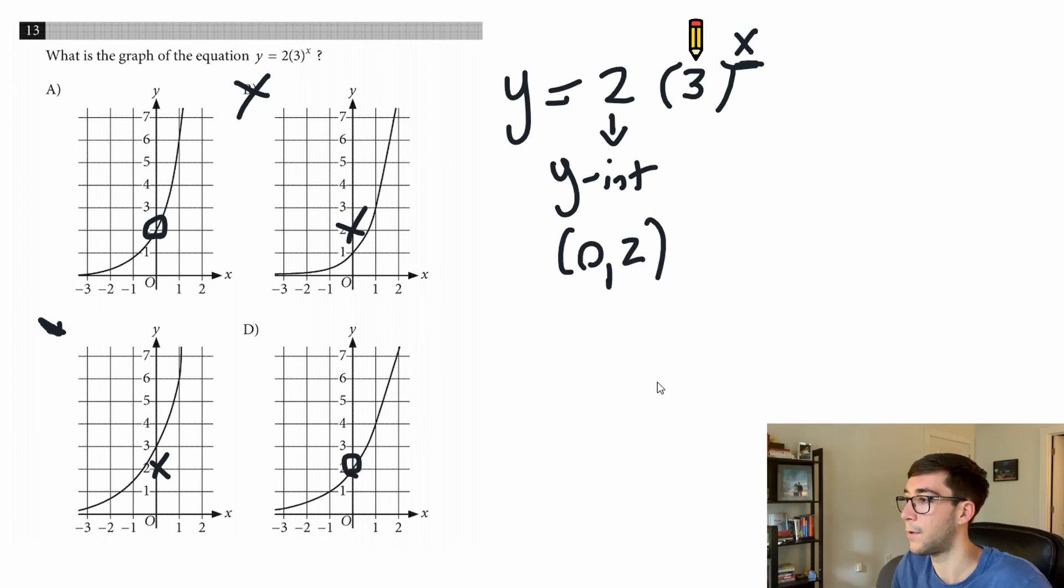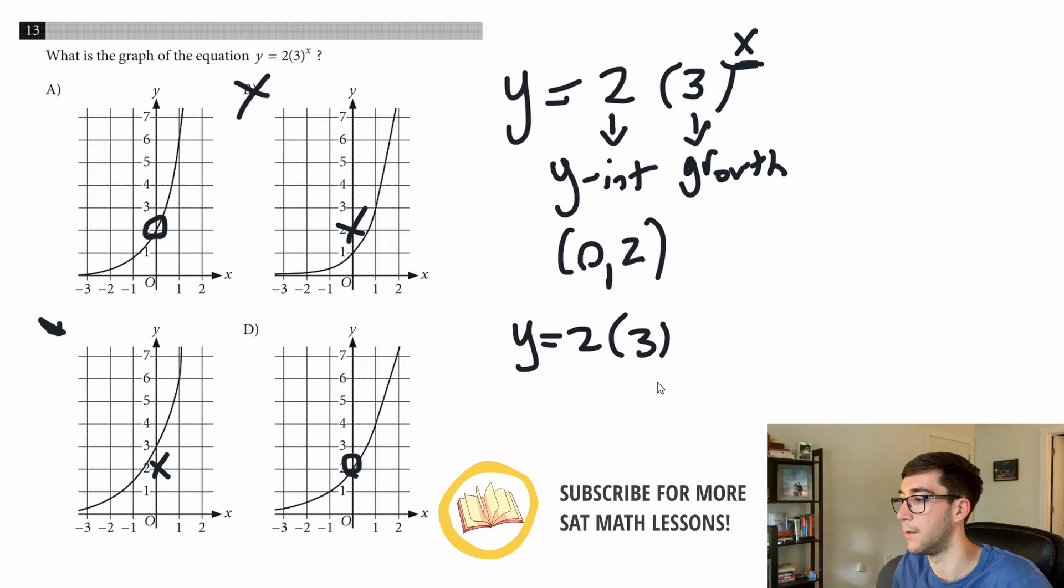Next, this part here is the growth factor, so it's going to grow by this much every time, or exponentially by that much every time. To get a sense of the other point, we just plug in another number. I usually just do one, so let's plug in one. We do y equals 2 times 3 to the one.